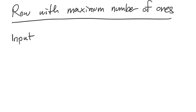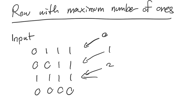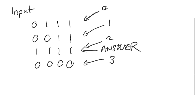So let's say the matrix looks like this: [0,1,1,1], [0,0,1,1], [1,1,1,1], [0,0,0,0]. By inspecting this visually, we can see that row 2 is the row with the maximum number of ones — it has four ones. So the output is 2.